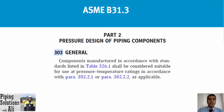Let's review paragraph 303, general: components manufactured in accordance with standards listed in Table 326.1 shall be considered suitable for use at pressure-temperature ratings in accordance with paragraph 302.2.1 or paragraph 302.2.2 as applicable. This means that ASME B31.3 accepts pressure-temperature rating calculations contained in standards listed in Table 326.1 for piping components. Therefore, for pressure design of piping components, we refer to the standard specified in that table.